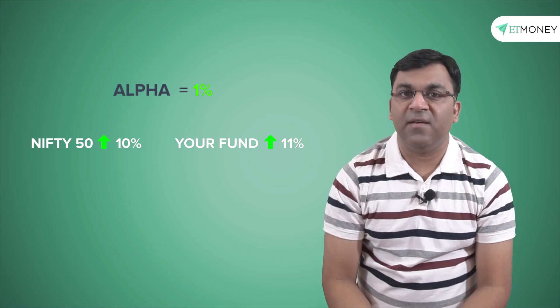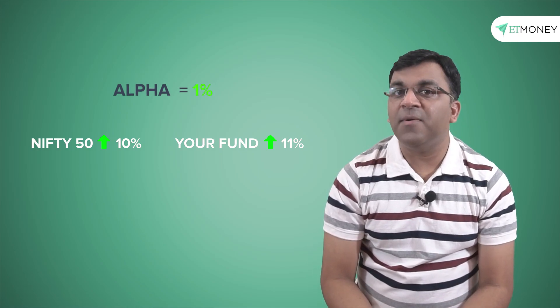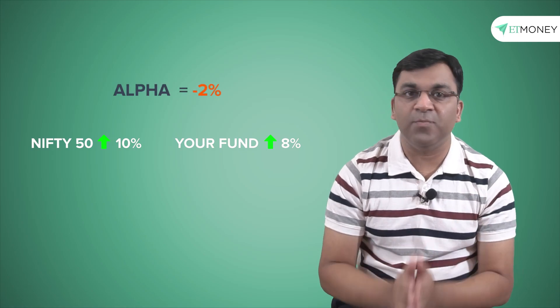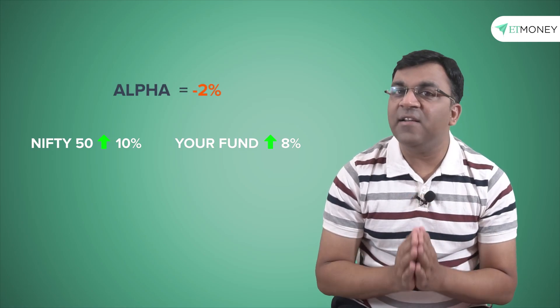Alpha quite simply measures how much better a fund has performed as compared to its benchmark index. For instance, if the NIFTY 50 delivered 10% this past year and your fund did 11%, then the alpha is positive 1%. And if your fund underperformed and achieved only 8%, then the alpha is minus 2%. Which means actively managed funds can have positive or negative alpha depending on how well the fund manager runs the fund.